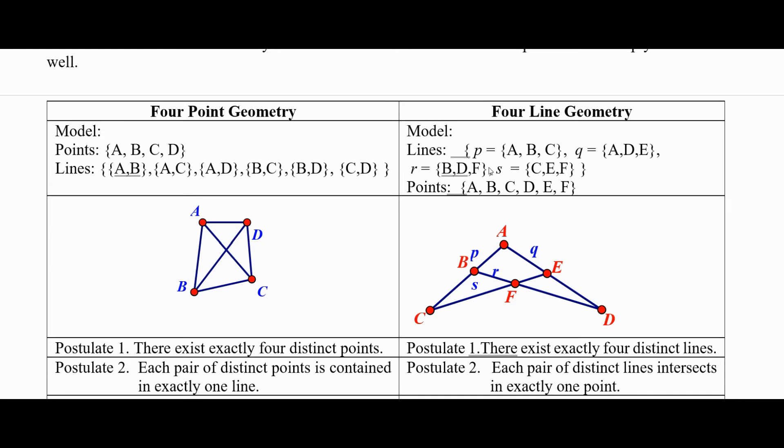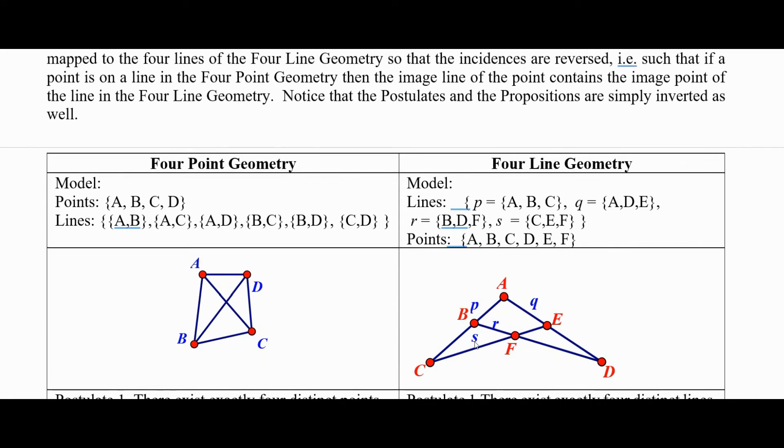And our four-line geometries, we start at four lines P, Q, R, and S, which were sets of three points ultimately, which we see the model here. And we ended up with six points. Notice here we have four points, six lines. Here we have six points, four lines. And so we're going to match those up with a one-to-one correspondence.